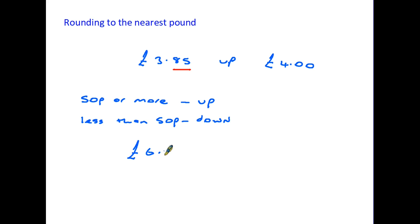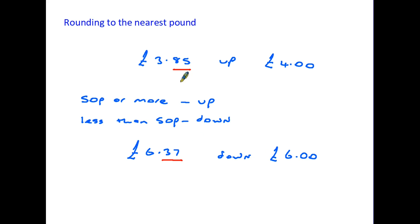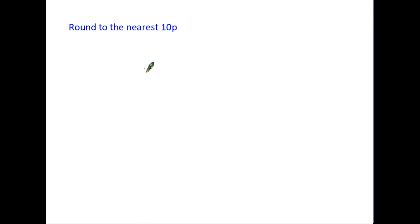On the other hand, if we look at six pounds 37, again we look at the pence — it's less than 50p, so in this case we have to round down. Rounding down from six pounds 37, we get six pounds. So because the top one had more than 50p it went from £3.85 up to four pounds; the bottom one had less than 50p so it rounded down to six pounds.